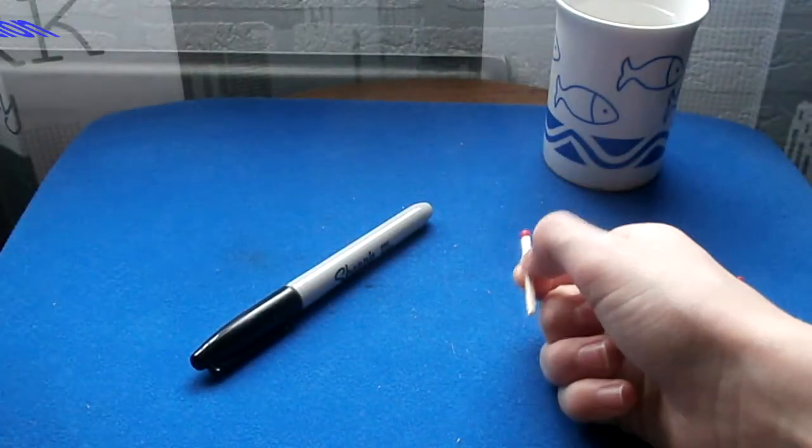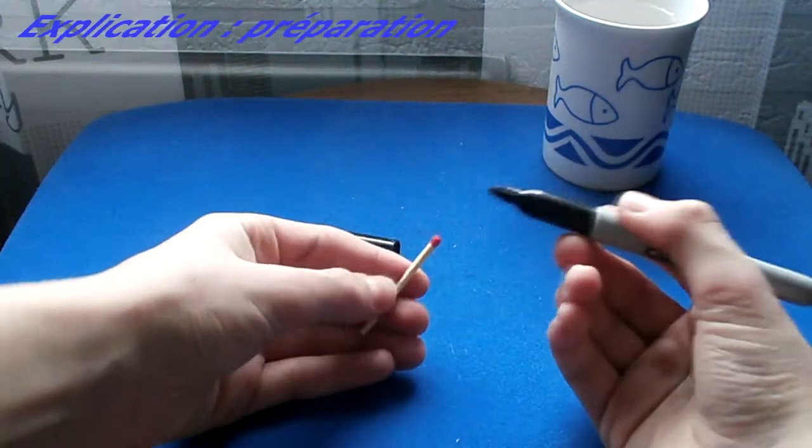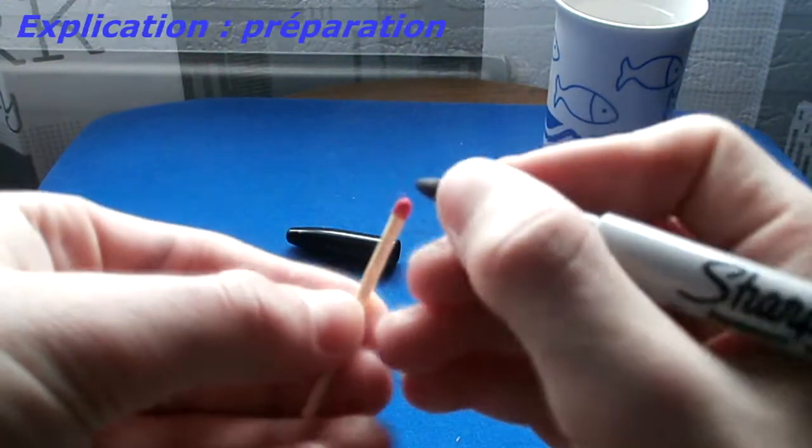Pour commencer, vous allez prendre une des deux allumettes, celle que vous voulez, et vous allez colorier avec votre feutre noir, comme ceci, le petit bout rouge.